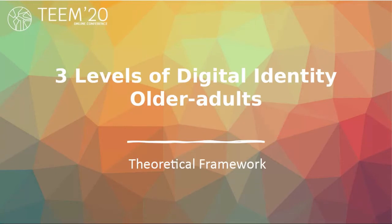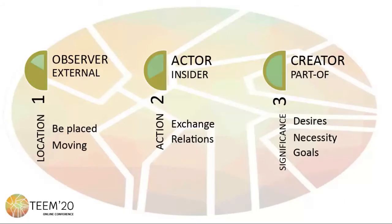The theoretical framework developed covers three levels for digital identity. The first level is location, in which the user is an observer external to the environment. The second level is action, in which the user feels as a set of actors incited to the environment, with desires, necessities, needs, or goals for connecting or being connected online.